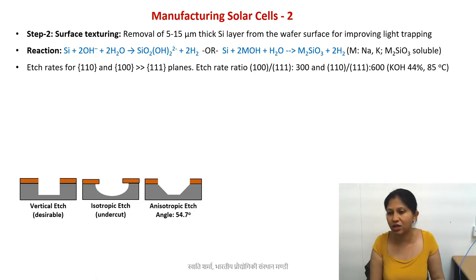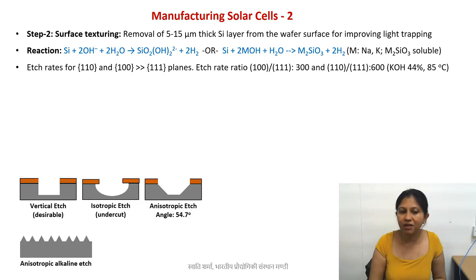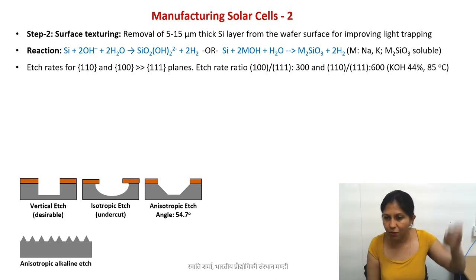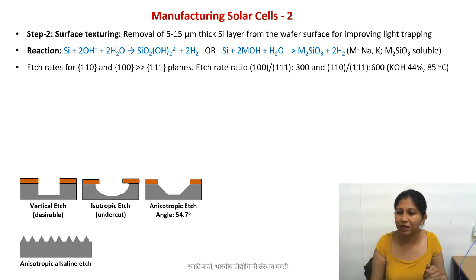If I do alkaline etch without the mask for the whole wafer, I will get square pyramid patterns on the silicon surface. If I did isotropic etch with acid or dry etching like oxygen plasma, I will get more random patterns.